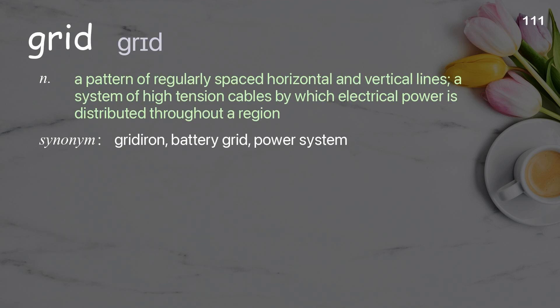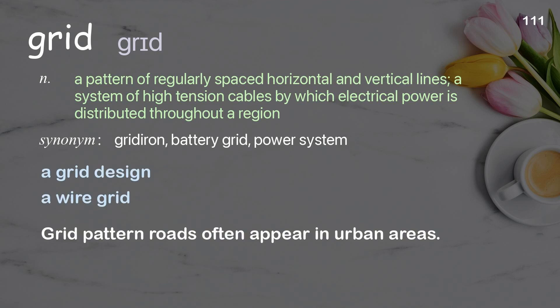Grid: a pattern of regularly spaced horizontal and vertical lines; a system of high-tension cables by which electrical power is distributed throughout a region. Examples: a grid design, a wire grid. Grid pattern roads often appear in urban areas.